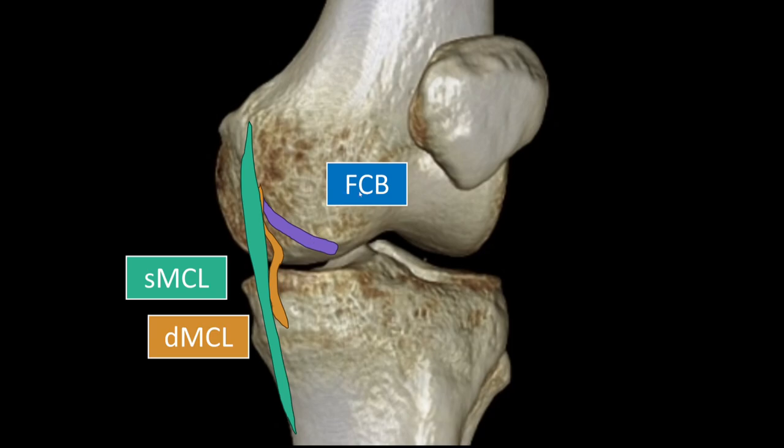This structure is called the FCB — the fascicular capsulofemoral band. I'll show you this in a real case in just a second.